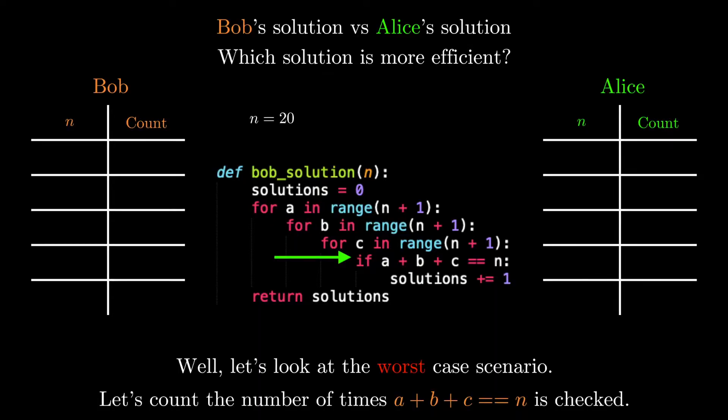Let's look at n equals 20. In Bob's program, we can check the if condition for all A values from 0 to 20 inclusive, all B values from 0 to 20, and then all C values from 0 to 20. This ends up being a total of 21 cubed. When n equals 40, we end up with 41 cubed as a count by a similar calculation. And we can take a few more data points for comprehensiveness.